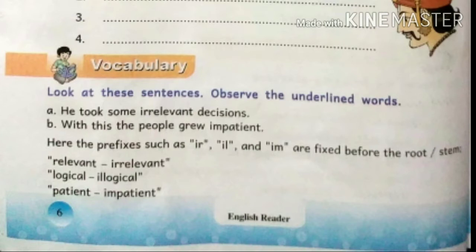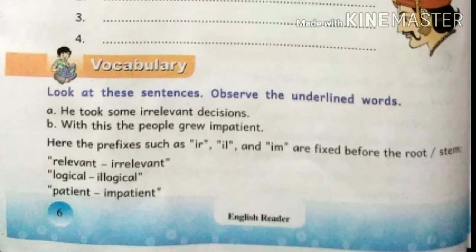A. He took some irrelevant decisions. 'Irrelevant' should be underlined here. B. With this, the people grew impatient. 'Impatient' should be underlined. Here, the prefixes such as IR, IL, and IM are fixed before the root or stem.